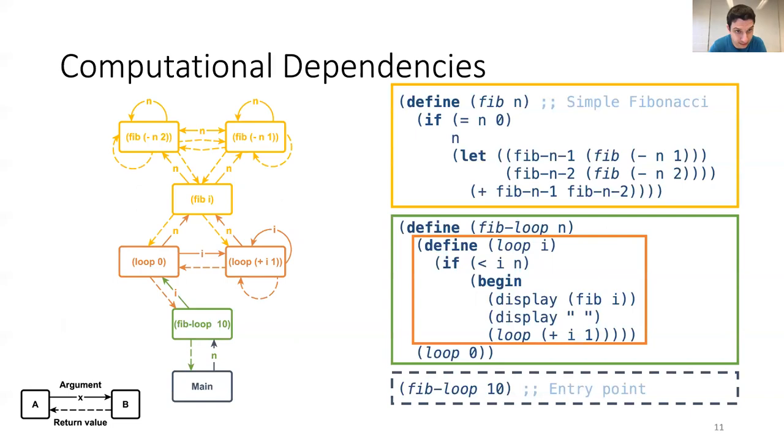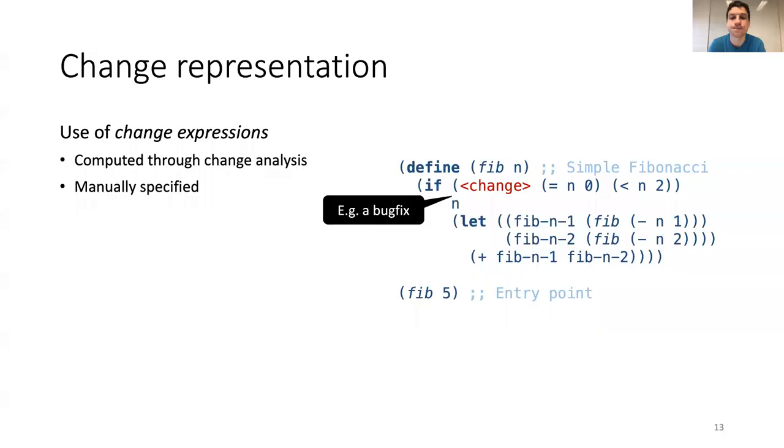So, let's look at our little program again. Then we see that there are many, many dependencies. And we find that these dependencies can actually be used to incrementalize the modular analysis. For an incremental analysis, we of course need to be able to represent changes to a program. And for this, we have introduced a kind of change expression, which can be added by a change distiller or CI system, for example, but also manually.